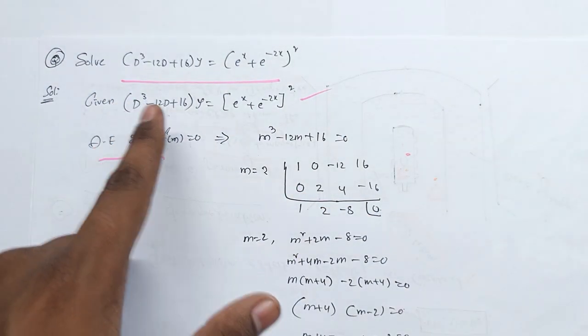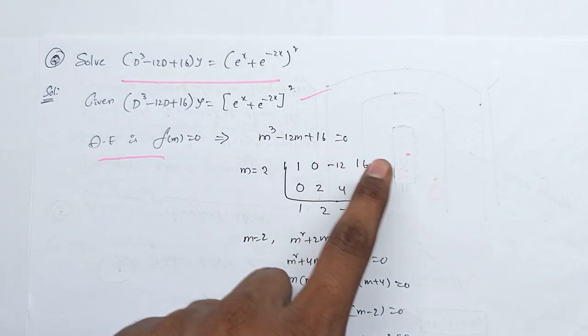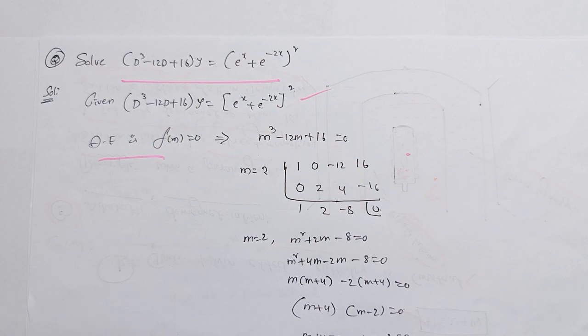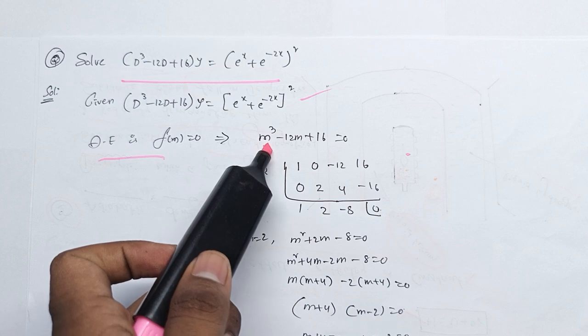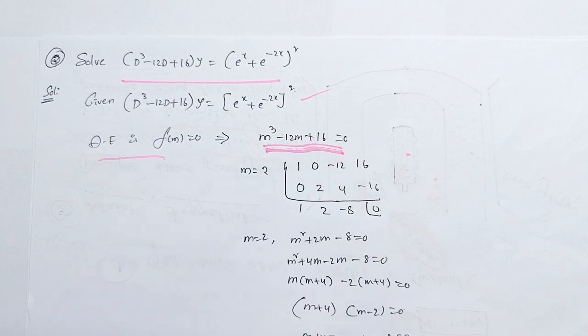This equation gives y is equal to y. It is the cube. This is the synthetic division method, and y is equal to y.